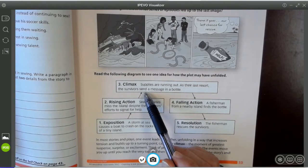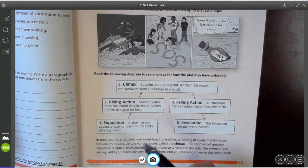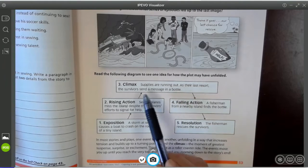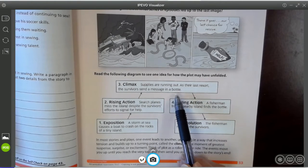So this leads us to the climax. And the climax is the turning point. This is when the big event takes place. And in this particular story, supplies are running out as their last resort. The survivors send a message in a bottle.